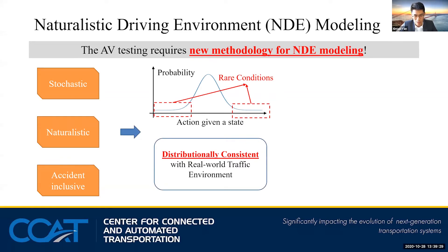To generate such a realistic naturalistic driving environment, the behavior model of the vehicles needs to be distributionally consistent with the real-world traffic environment. The x-axis here is the action given a state, for example, the acceleration in the free-flow situation. The y-axis here is the probability of different actions. The probabilistic distribution needs to not only capture the driving behavior in normal situations, but also in rare conditions.